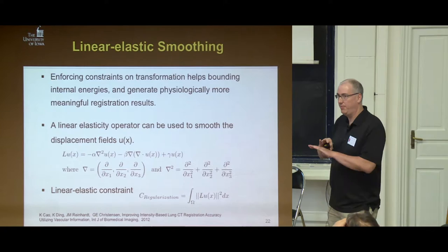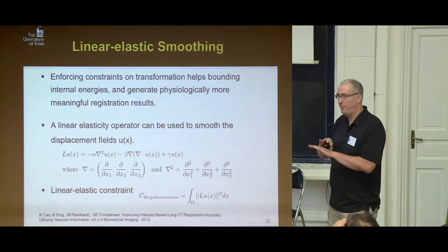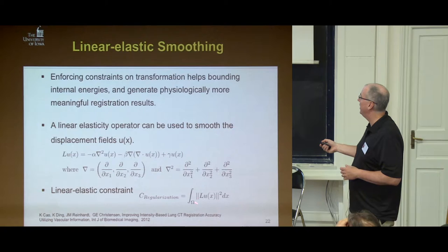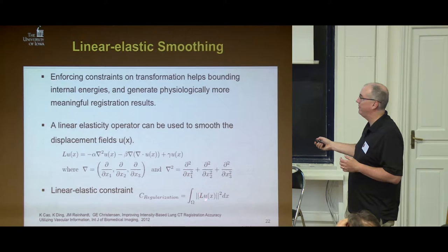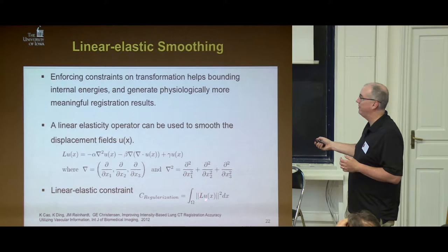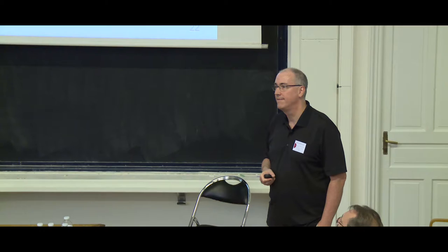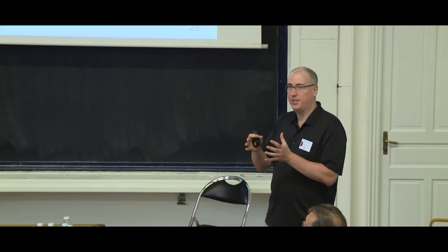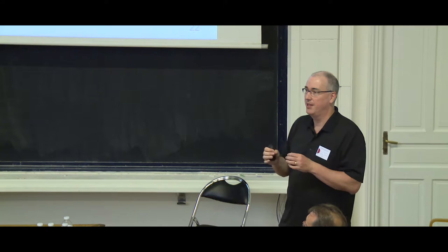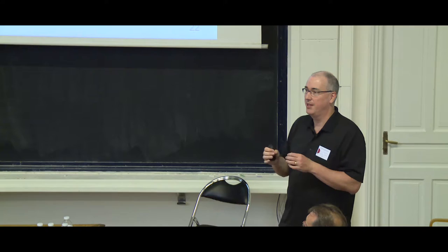We want the simplest transformation to describe the motion. The final image-based cost function comprises the mass-preserving term, the sum of squared differences, the vesselness, and the regularization term. For validation, we're using Keeling's program to get about 150 landmarks. When using just the sum of squared tissue volume, we see the method kind of fails at the diaphragm — that's where the lungs are moving the most. But when we add the vesselness, it gets the landmarks better. The vessels are a good landmark because they don't expand with the air — the airways get bigger but the vessels stay about the same size.